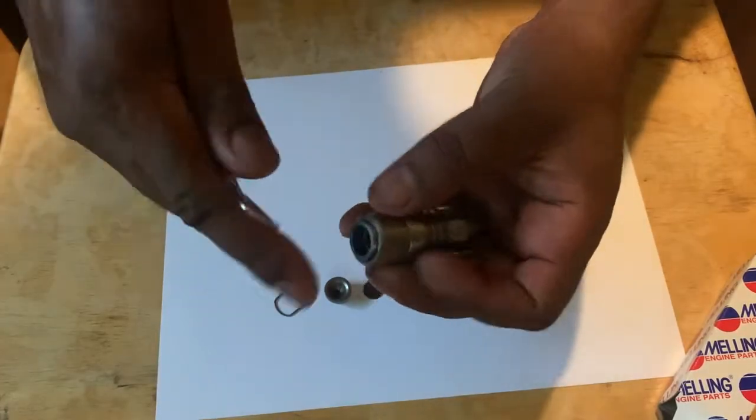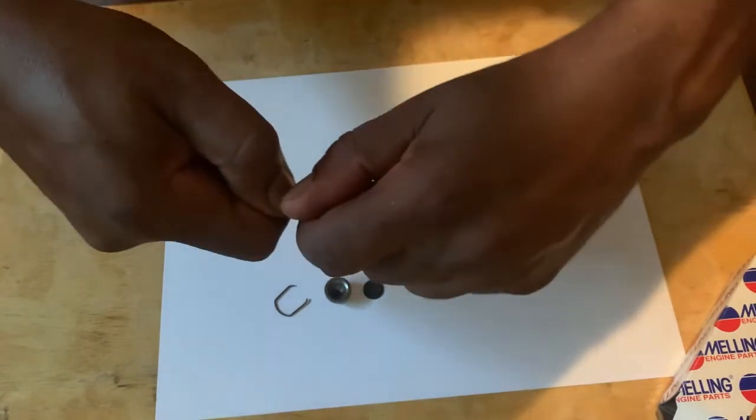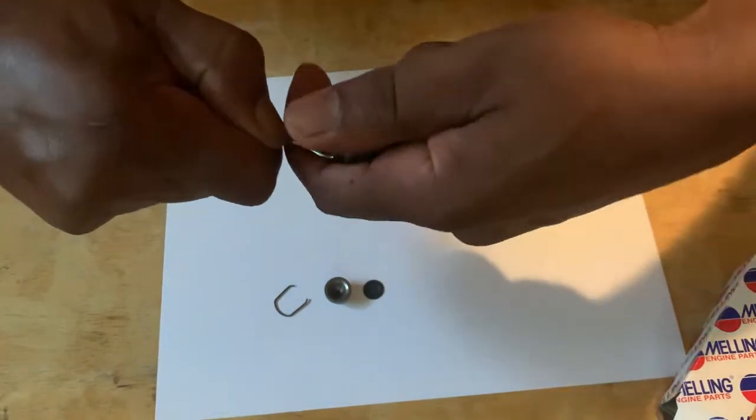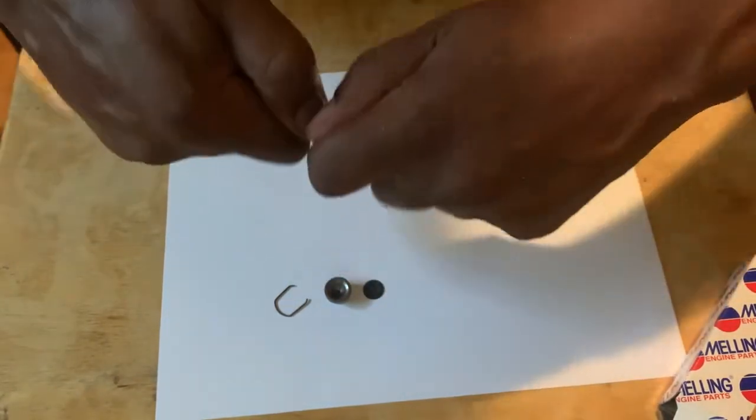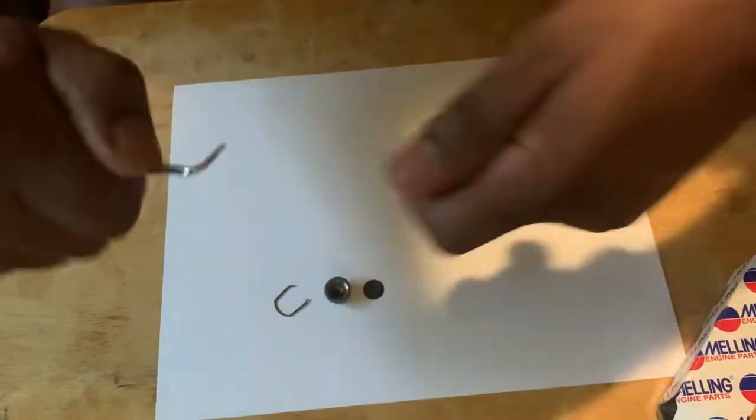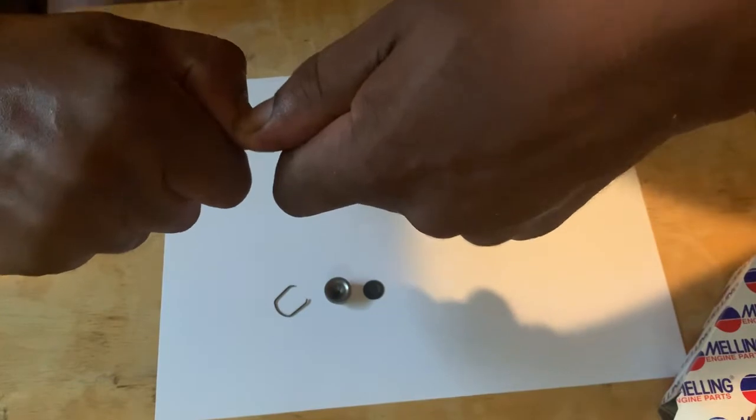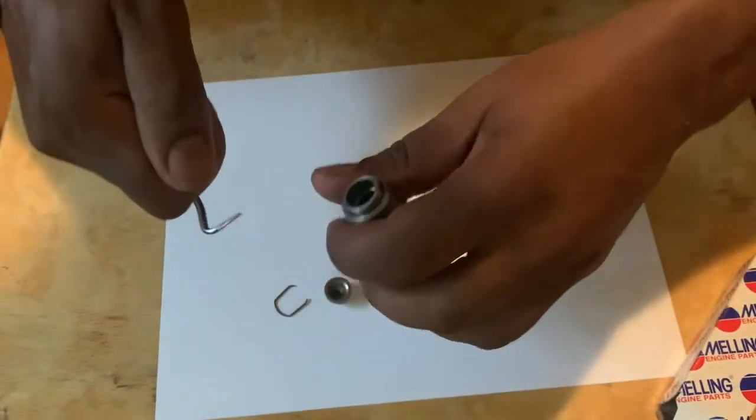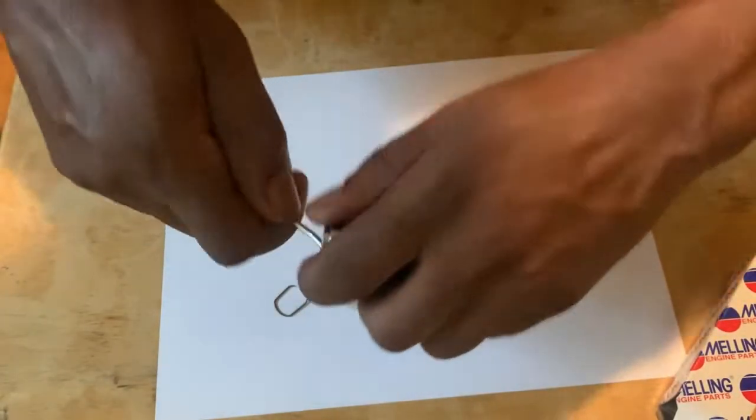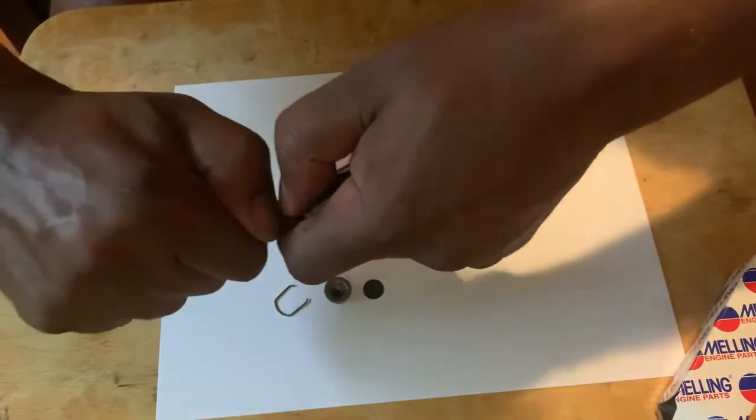Then this is the part I couldn't get out. It was stuck at the bottom because it's suctioned in there from the oil. This one's suctioned in there a little bit too. A little spring in the bottom, a little check ball.